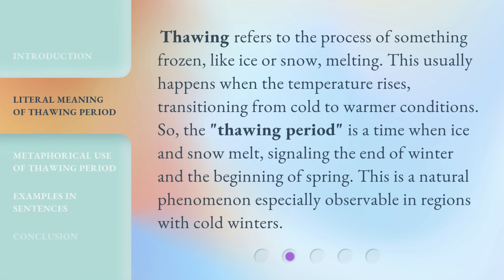Thawing refers to the process of something frozen, like ice or snow, melting. This usually happens when the temperature rises, transitioning from cold to warmer conditions. So, the Thawing Period is a time when ice and snow melt, signaling the end of winter and the beginning of spring. This is a natural phenomenon especially observable in regions with cold winters.